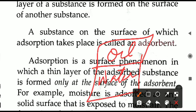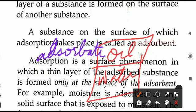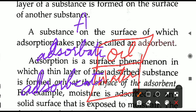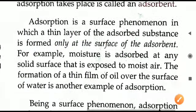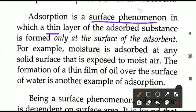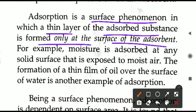In the example of oil and water, the oil is called the adsorbate, and the surface on which the oil has deposited — that is, water — is called the adsorbent. Remember these two terms: adsorbate and adsorbent. This completes the definition of adsorption: a separate layer of a given substance forms on another surface. It is a surface phenomenon only, and a thin layer of the adsorbed substance forms at the surface of the adsorbent.